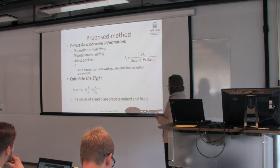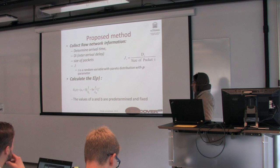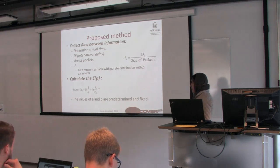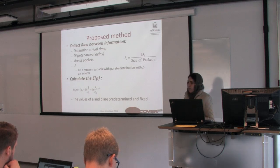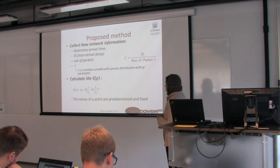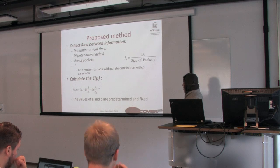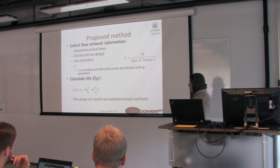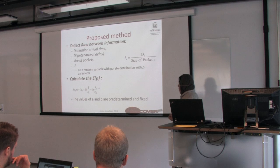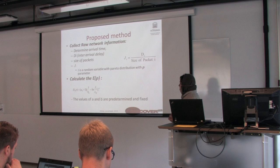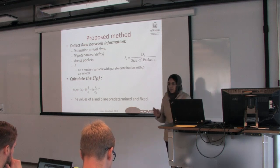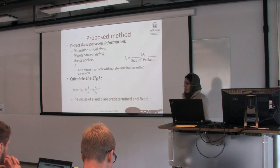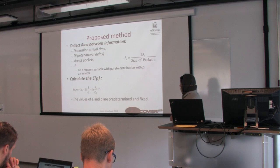At the first step of the proposed method, we gather network information consisting of arrival time, inter-arrival delay, and packet size. The authors define a variable j, defined as d_i divided by the size of packet i. They observe that j is a random variable that follows a Pareto distribution. As you may know, the Pareto distribution has a shape parameter, rho, which captures the behavior of the network.